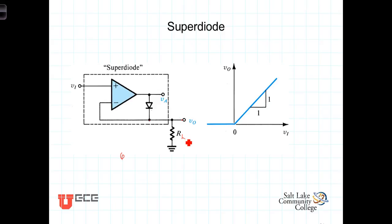This configuration has an interesting characteristic to it. You'll notice on the transfer function here for Vin and Vout, the transfer function goes just about through the origin. What's happening here?